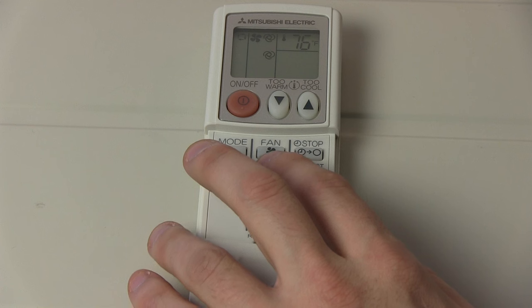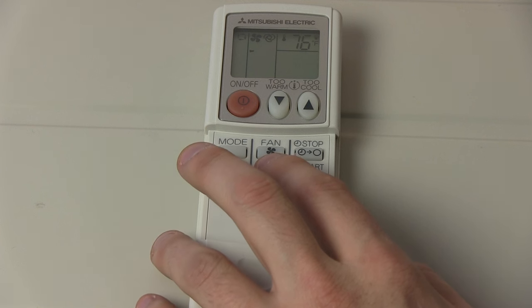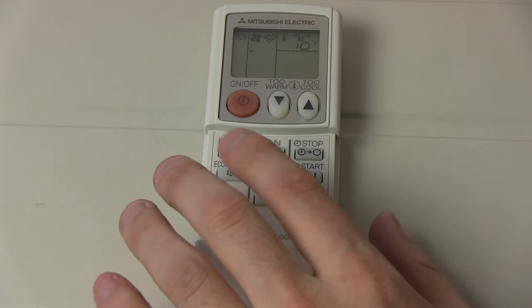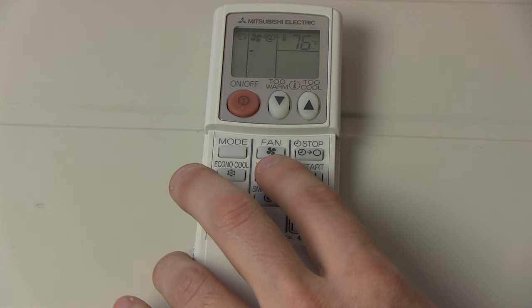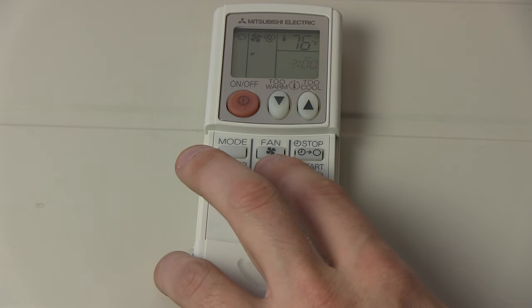As we hit the vane button, we can select where we want to set it at. Right now, our vane is set to blow out into the room. As we continue to hit our vane button, it lowers the vane setting.